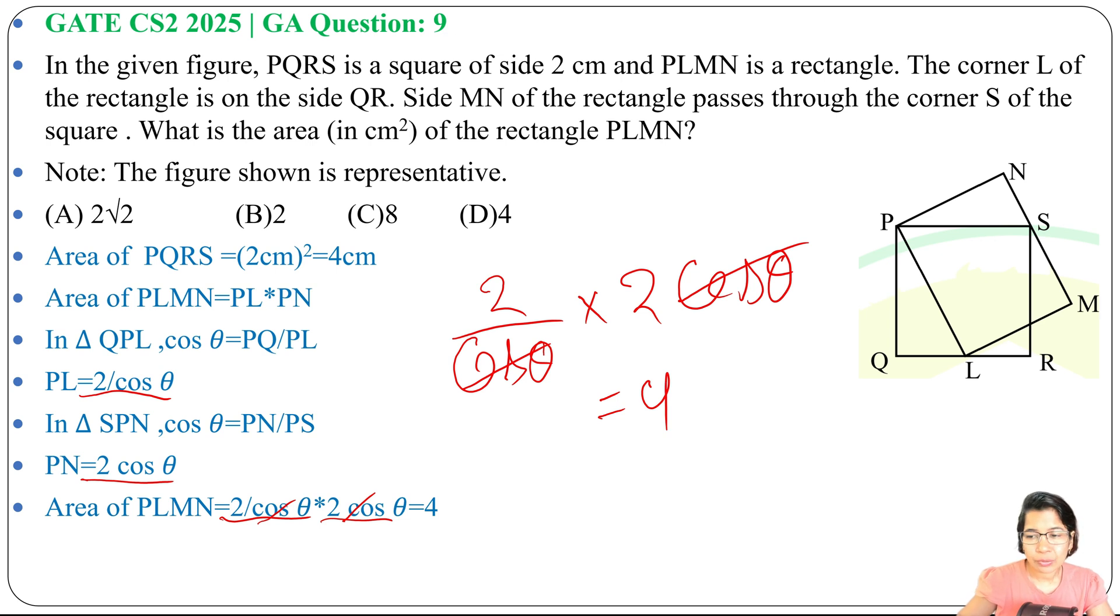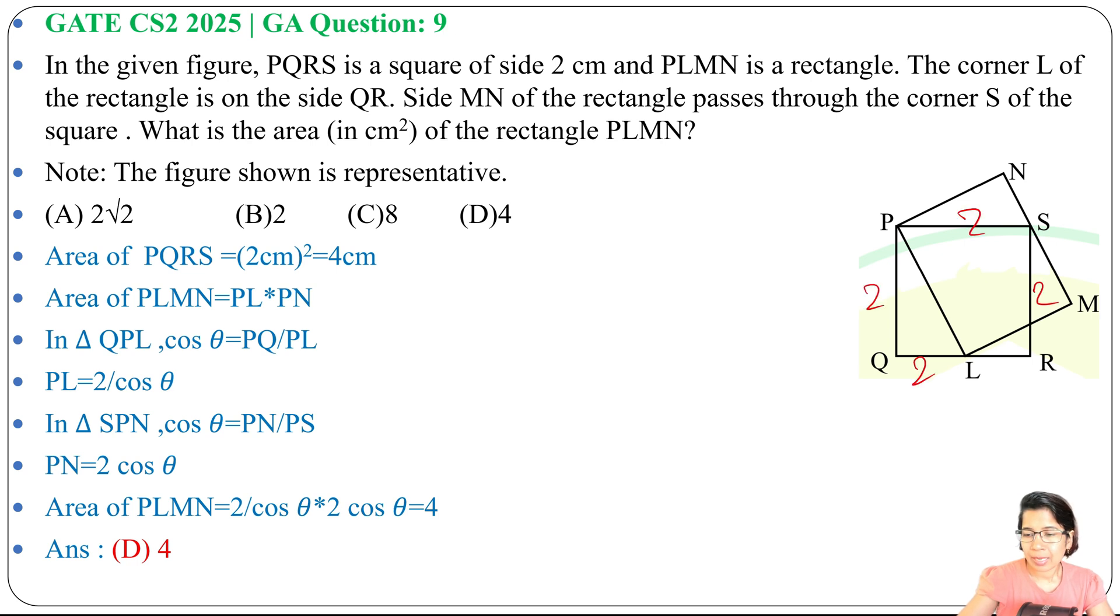Hence we found the area of the rectangle is also 4. Answer will be 4, it's present at option D. Here each side of the square is given, each side is 2 cm, and that rectangle overlaps on the square.